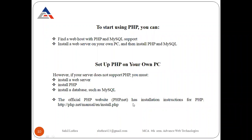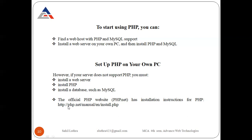The official PHP website, php.net, has installation instructions for PHP. If you have no idea which instructions to follow, go to the official PHP website php.net and find the instructions there. The specific URL is php.net/manual/en/install.php — go to that website and you will find all the installation instructions.